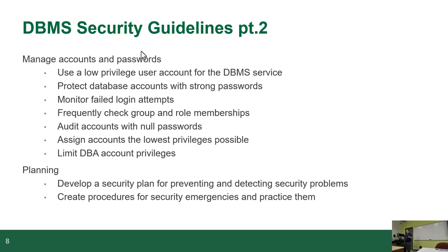You should monitor failed login attempts — keep track of when people are trying to access your system. You should audit your users, roles, and memberships to make sure you're not accidentally giving people permissions they shouldn't have. Audit accounts with null passwords — realistically nothing should have a null password. You don't need the world's hardest password, but you should have a password. Users with null passwords can log in just by knowing the username. Assign accounts with the lowest privileges possible — you might even want to limit the DBA's account privileges so there is only one superuser.